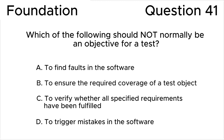Which of the following should not normally be an objective for a test? A: to find faults in the software. B: to ensure the required coverage of a test object. C: to verify whether all specified requirements have been fulfilled. D: to trigger mistakes in the software. Please press pause to choose your own answer before you see the correct answer on the screen.